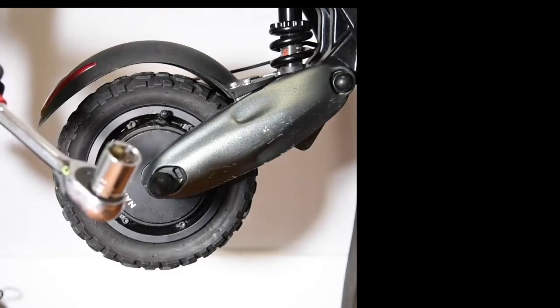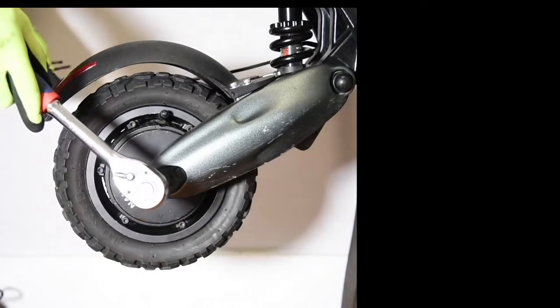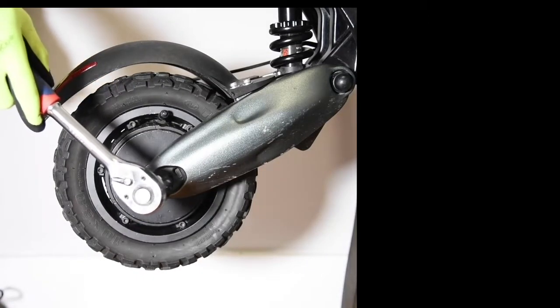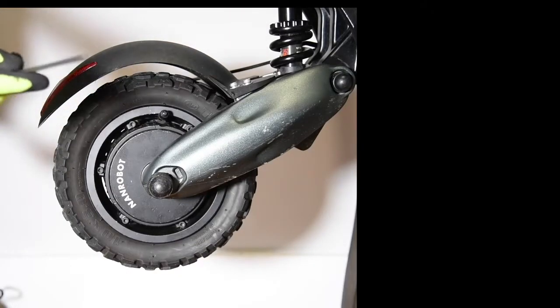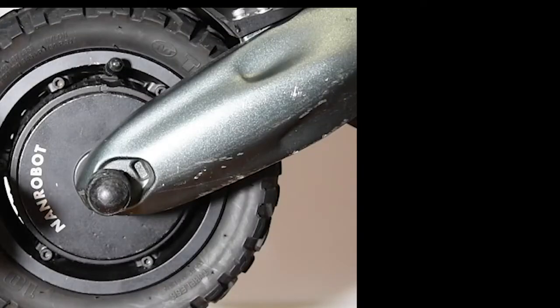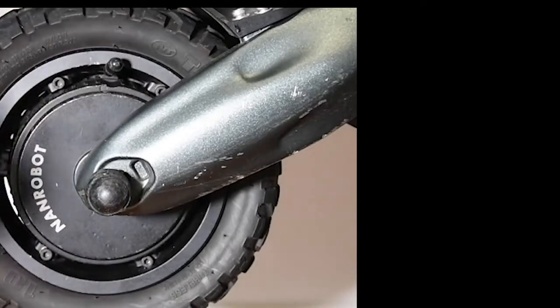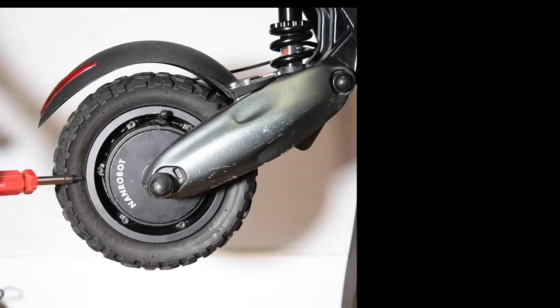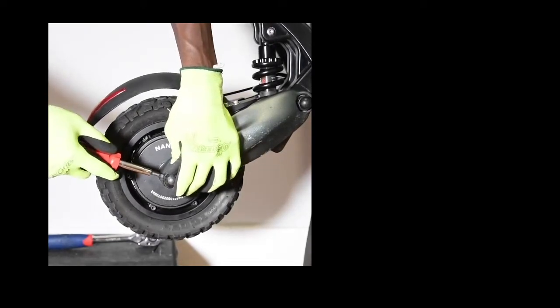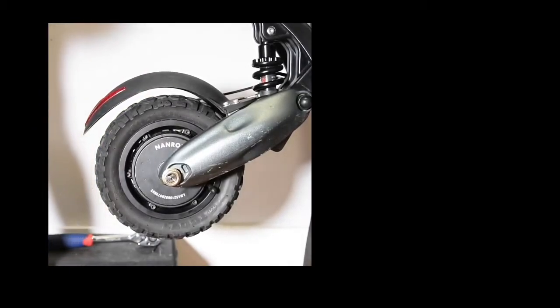This 22mm socket will be used to take off the screws on both sides, left and right. Then this 4mm key will be used to take off those screws. And this one will be used to take off the rim from the tire. Let's take this off the other side and put it here.